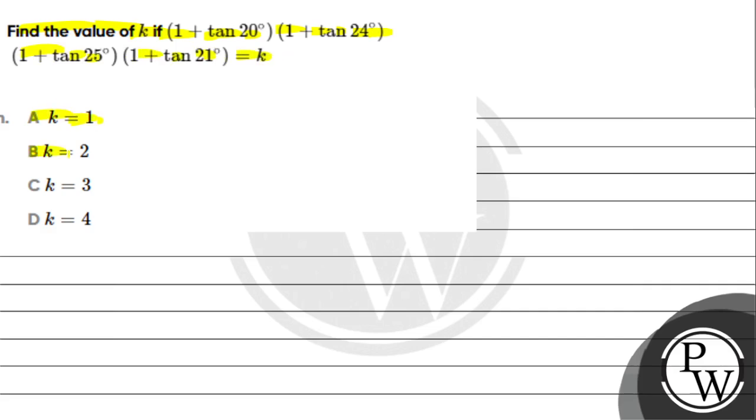Option A is k equals 1, Option B is k equals 2, Option C is k equals 3, Option D is k equals 4.